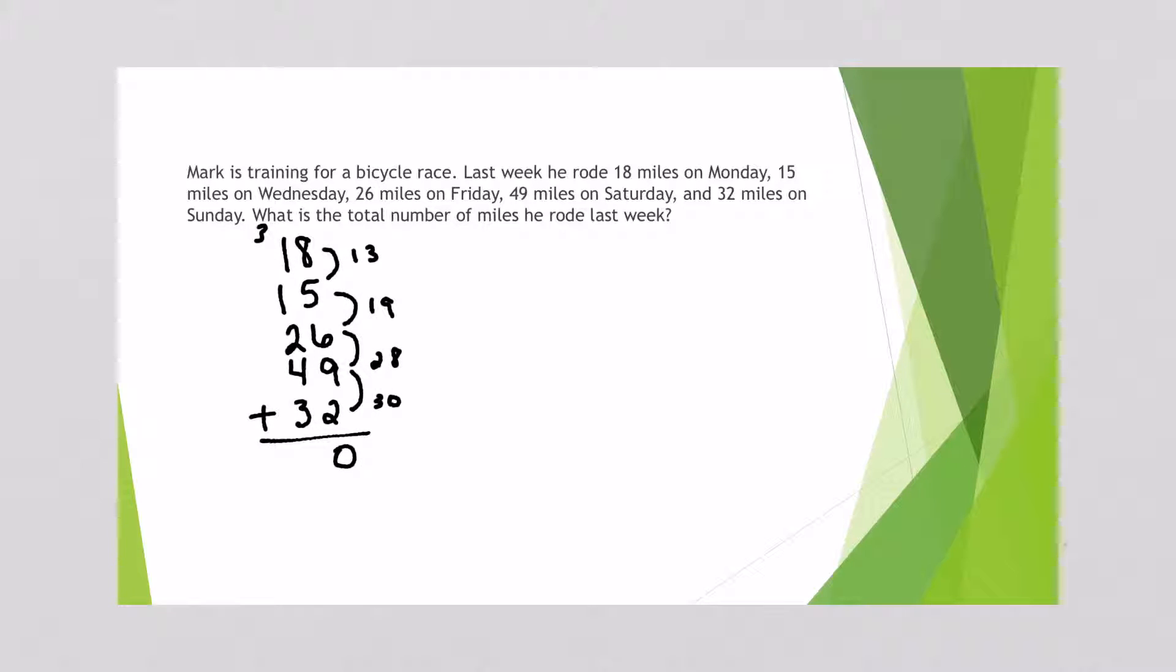Now I'm going to add up the numbers in the tens column. 3 plus 1 is 4, 4 plus 1 is 5, 5 plus 2 is 7, 7 plus 4 is 11, 11 plus 3 is 14. So it looks like Mark rode 140 miles last week.